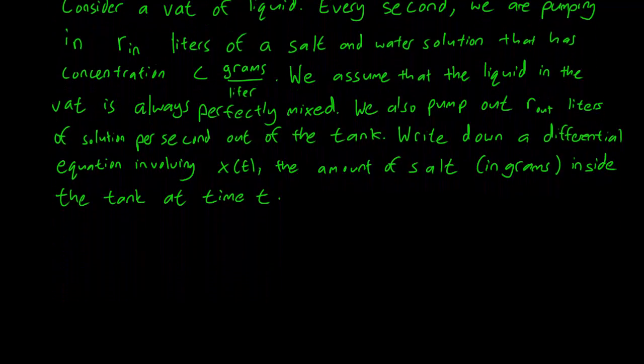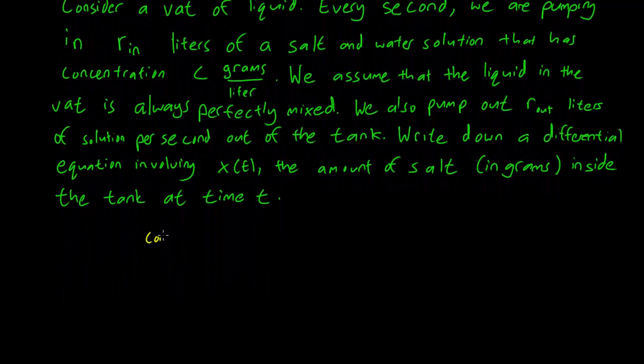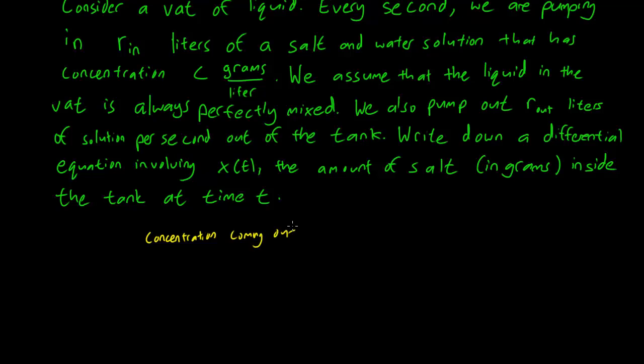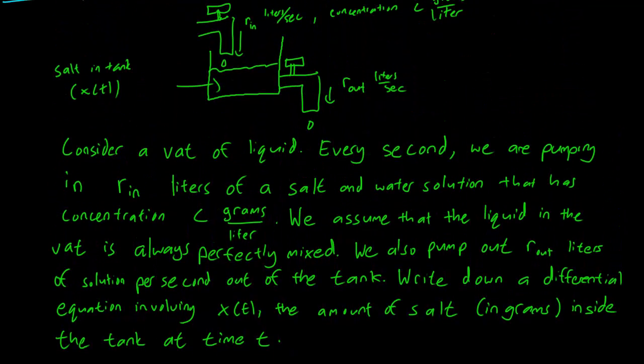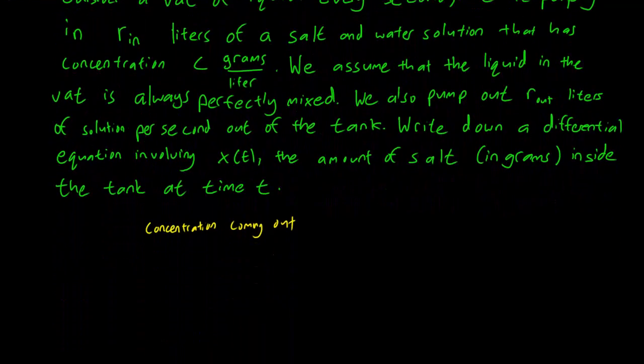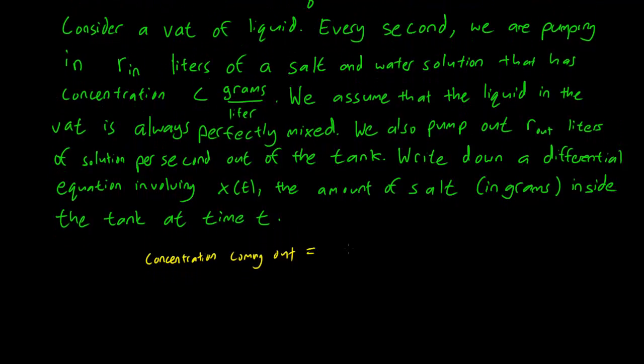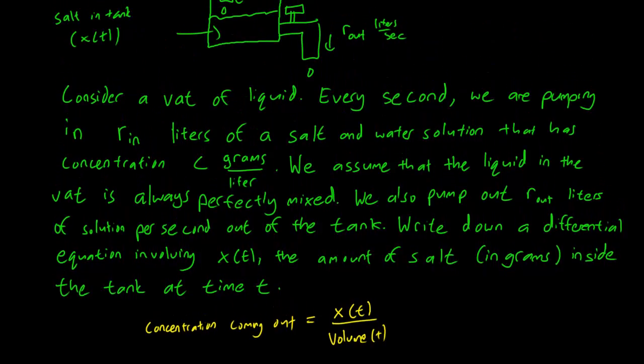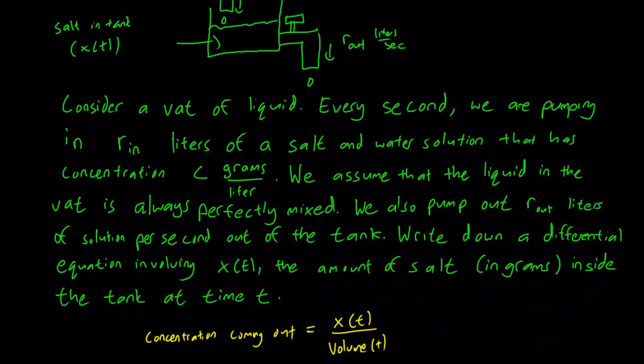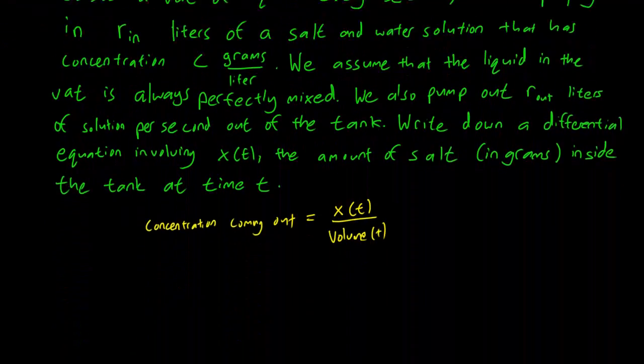So the concentration coming out is going to be the concentration inside the tank at time t. So that's going to be equal to the amount of salt in the tank at time t over the volume at time t. Okay? And so this gives us a hint and a way of writing a differential equation.